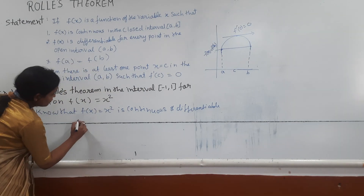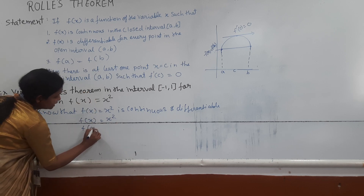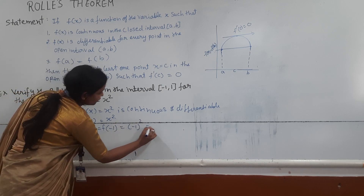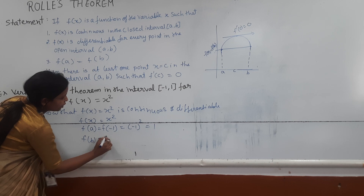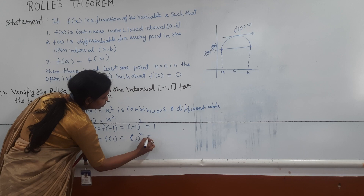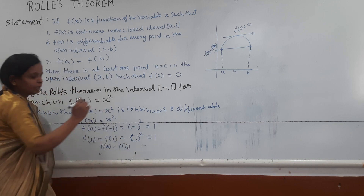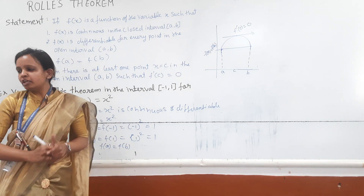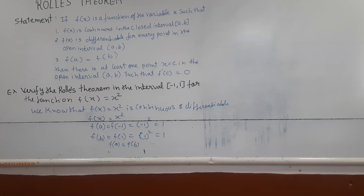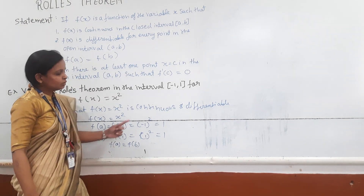Now, we check the third condition. Our point a is -1, so f(-1) = (-1)² = 1. And our point b is 1, so f(1) = 1² = 1. It means f(a) and f(b) are equal. Since both endpoint values are equal, there exists a point c.